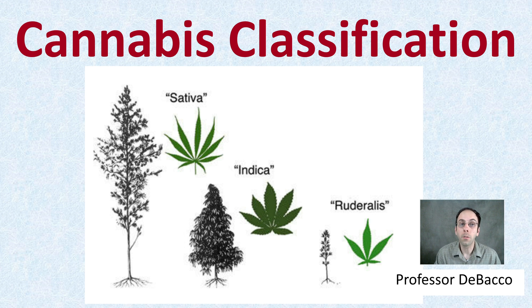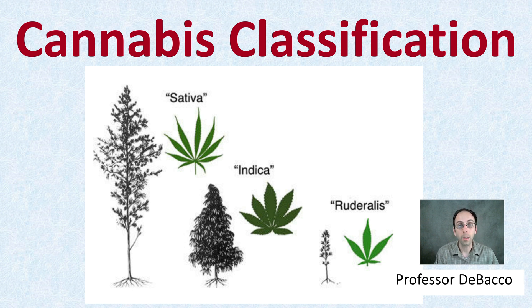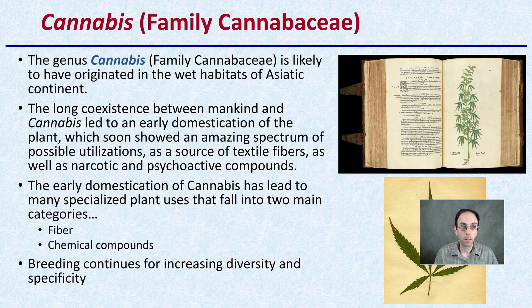Welcome to another DeBaco University video. Here we're going to be looking at cannabis classification. These three terms you might be familiar with — sativa, indica, and ruderalis — we're going to define them and look at them in a little bit more detail here.